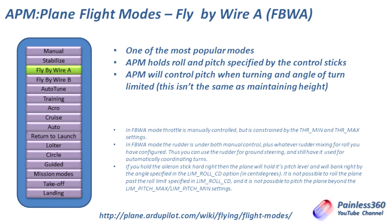Next is fly-by-wire A and fly-by-wire B. Fly-by-wire A is one of the most popular modes for APM plane. APM holds the roll and pitch specified by the control sticks — you put the input in and APM takes care of the rest. It will control the pitch when turning, so if you put aileron in, APM makes sure the pitch is maintained through the turn and the nose doesn't drop or rise. Throttle is manually controlled but there are two parameters, throttle_min and throttle_max, that control the range. Rudder is also under manual control, and if you hold the aileron stick hard over it will bank right up to a maximum angle set by LIM_ROLL_CD.